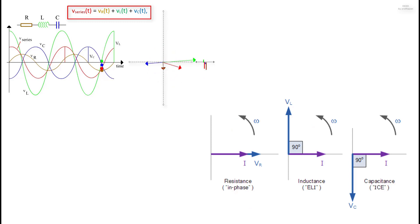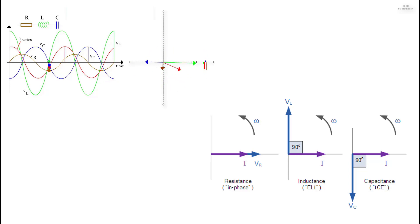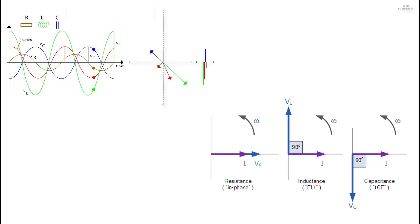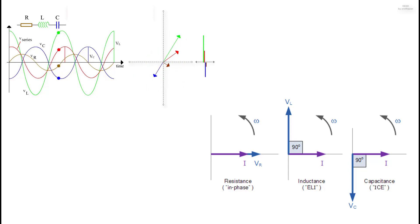This means we cannot simply add together VR, VL and VC to find the supply voltage VS across all three components, as all three voltage vectors point in different directions with respect to the current vector. Therefore we will have to find the supply voltage VS as the phasor sum of the three component voltages combined together vectorially.